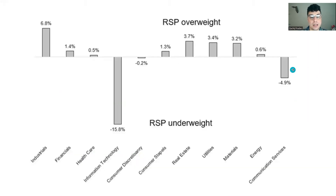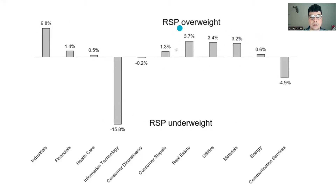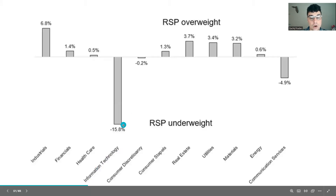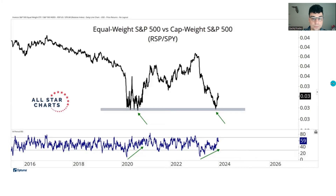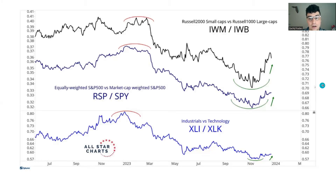The reason is that the RSP is vastly underweight information technology and overweight things like industrials. So RSP outperforming means things like the Dow Jones Industrials — DIA or XLI — are doing well. You also see real estate, utilities, materials, and energy here — areas that don't hold much weight in the S&P 500. Ultimately, because the RSP is so underweight information technology compared to SPY, if tech isn't performing well, it's typically not good for the stock market.